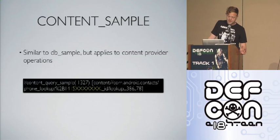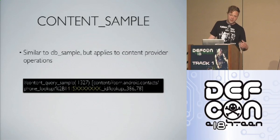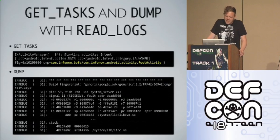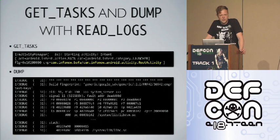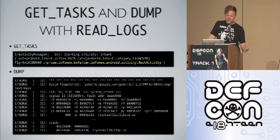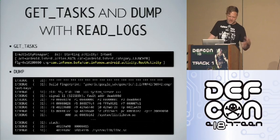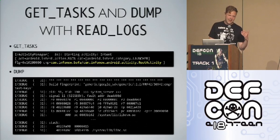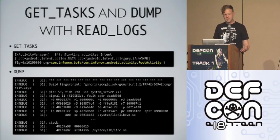There's a similar hook for content providers. For example, data is disclosed when you're doing a phone number lookup in the main contacts application. There's a GET_TASKS permission that lets you retrieve a list of recently accessed activities — but those activities' launch intents are also logged, so scanning system logs gives you the same information. There's a DUMP permission gating access to crash dump data about applications — but all that data also happens to be in the logs.